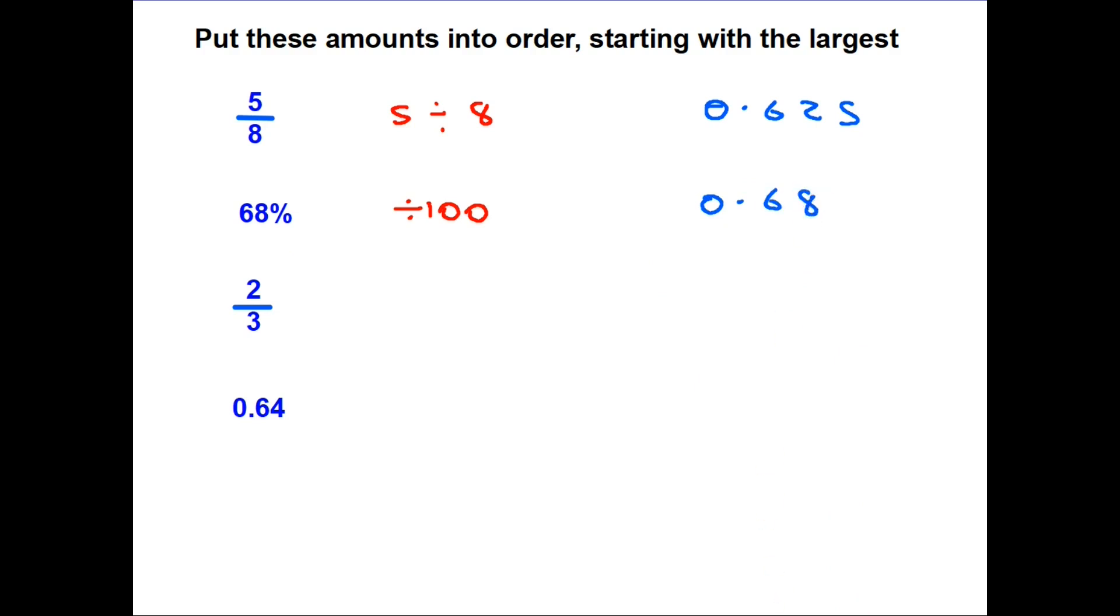We're back to a fraction—this is 2/3, so 2 divided by 3. This does something a little different because if you divide 2 by 3, you get 0.666666, and it goes on forever. We don't need to worry about that right now; I'll look at it a bit later.